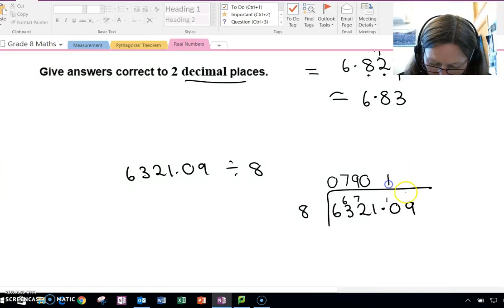8s into 10 is 1, there is 2 left over. 8s into 29, 3 times 8 is 24, so I've got 5 left over to carry. So 8s into 50, 6 times 8 is 48.